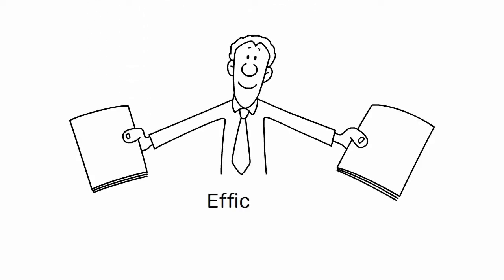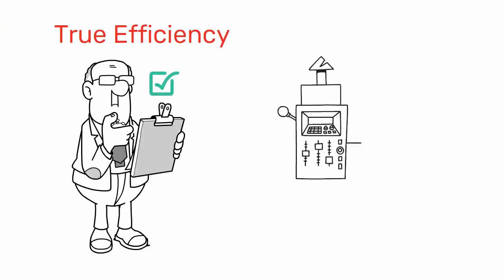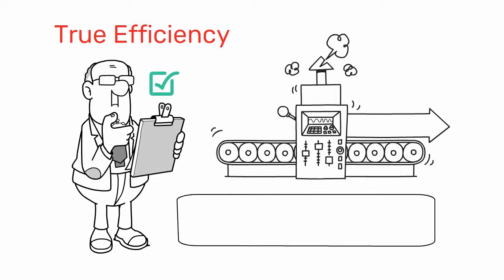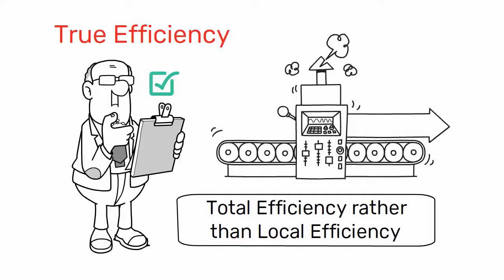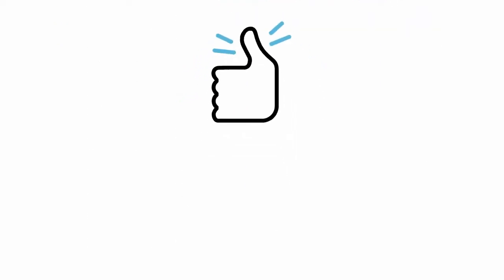That's it for today's lesson on efficiency in lean manufacturing. Remember, true efficiency is achieved by meeting customer requirements with the minimum amount of resources, and it's important to focus on total efficiency rather than local efficiency. Thank you for watching. You will find more details in the description.